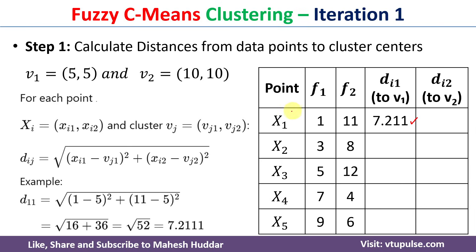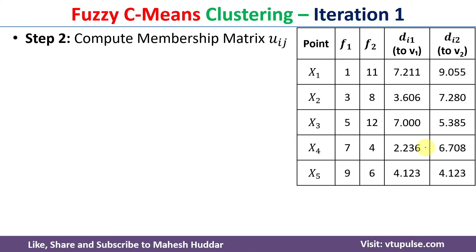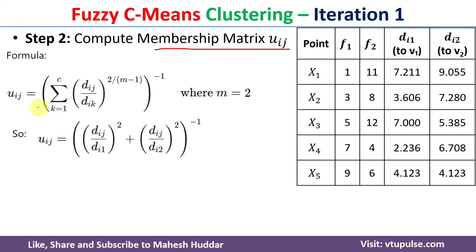Similarly, we find the distance from all data points to v1 and all data points to v2. Next, we compute the membership matrix uij using the formula: uij = [summation over k from 1 to c of (dij / dik)^(2/(m-1))]^(-1). Since the number of clusters c=2 and m=2, the exponent 2/(m-1) becomes 2/1 = 2.